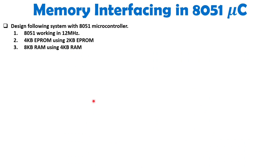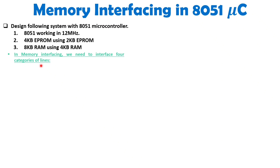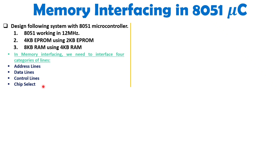Let us go through this step by step. The problem statement is to design a system with 8051, provide a clock of 12 MHz, interface 4KB of EPROM using 2KB EPROM chips, and have 8KB of RAM using 4KB RAM chips. When interfacing memory, there are four categories of lines: address lines, data lines, control lines, and chip select.